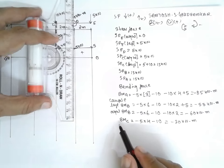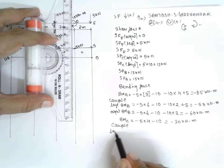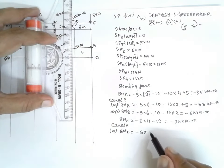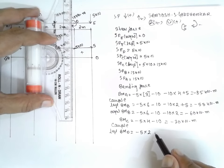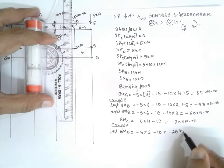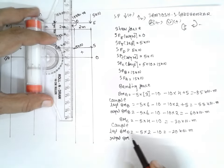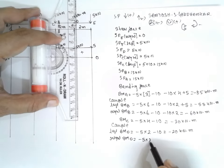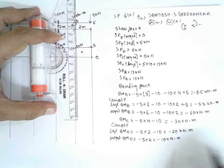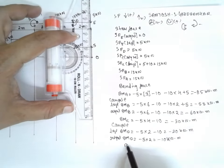At D there is a couple, so I consider left and right. BM at D left equals minus 5 into 2, minus 10 (couple from left side), giving minus 20 kilonewton meters. BM at D right equals minus 5 into 2, giving minus 10 kilonewton meters. Bending moment at E equals zero.